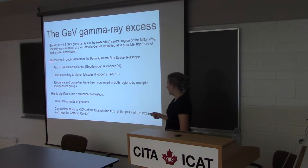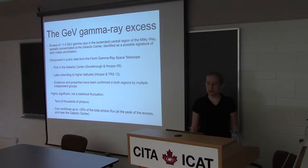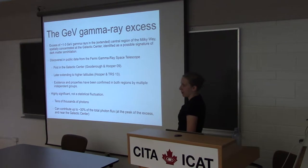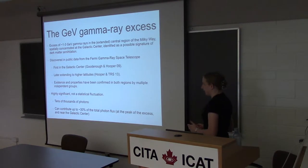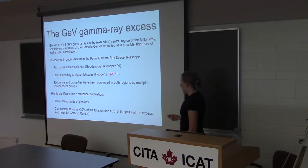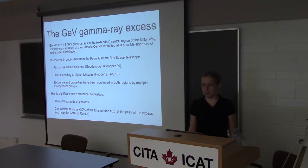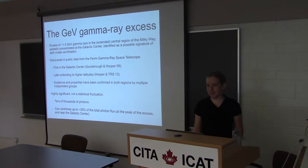It was first discovered in the galactic center by Goodenough and Hooper in 2009. The Fermi data became public in September 2009, and this paper came out in October or November 2009 — very fast. The reason it was so fast is that this signal is not particularly small. At the peak energy of the excess, around 1 to 3 GeV, it's about a third of the photons coming from close to the galactic center. In the latest data sets, the number of photons attributed to this excess is in the tens of thousands.